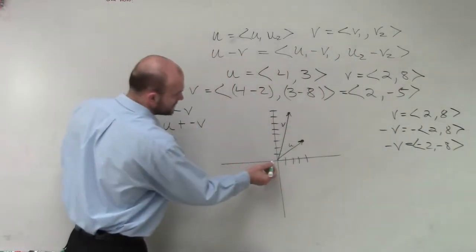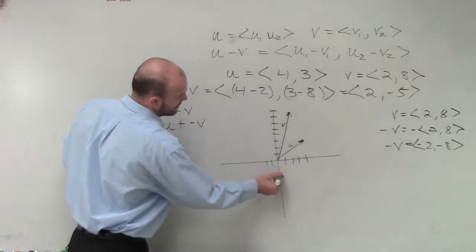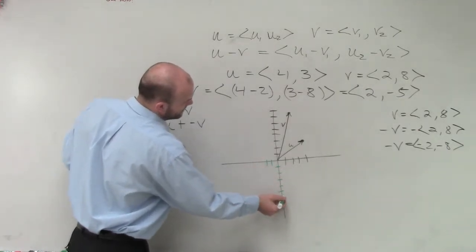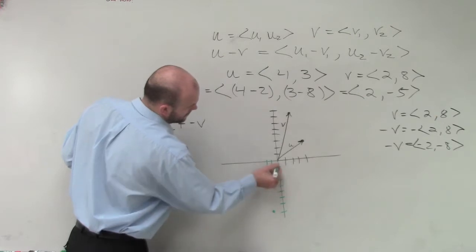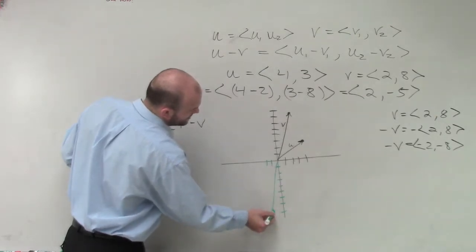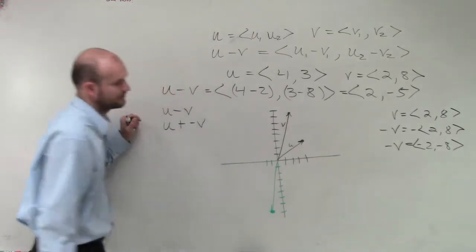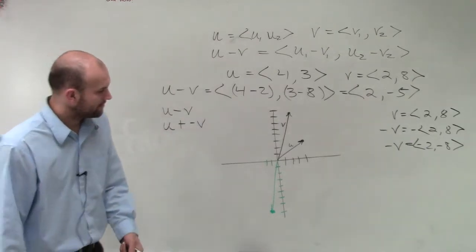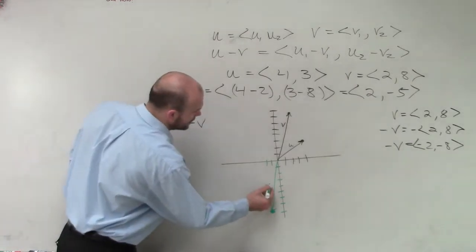So now I go over negative 2, down 8. 1, 2, 3, 4, 5, 6, 7, 8. And you guys can see it's pretty much a direct reflection, right? So now that is what we call negative v.